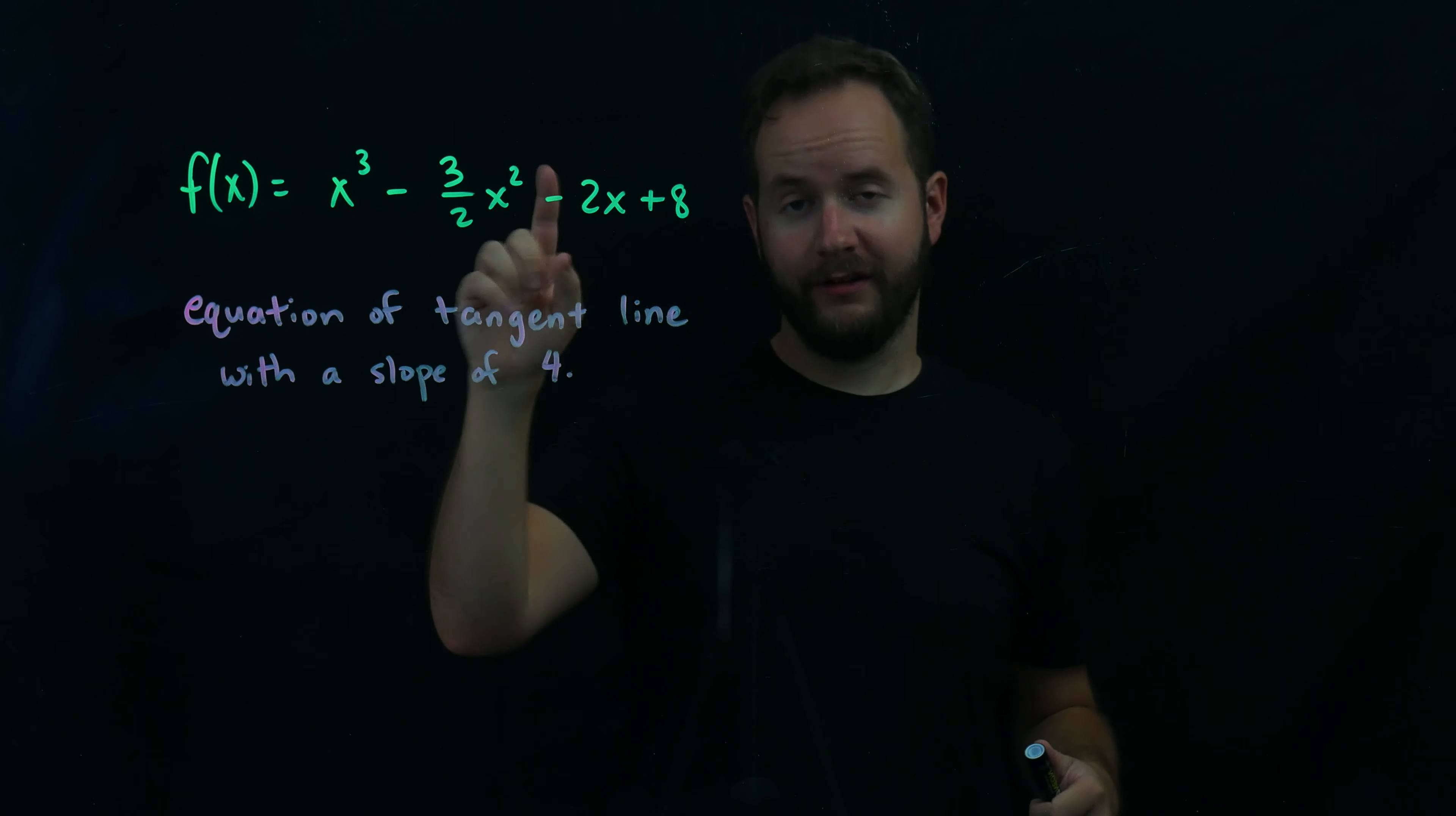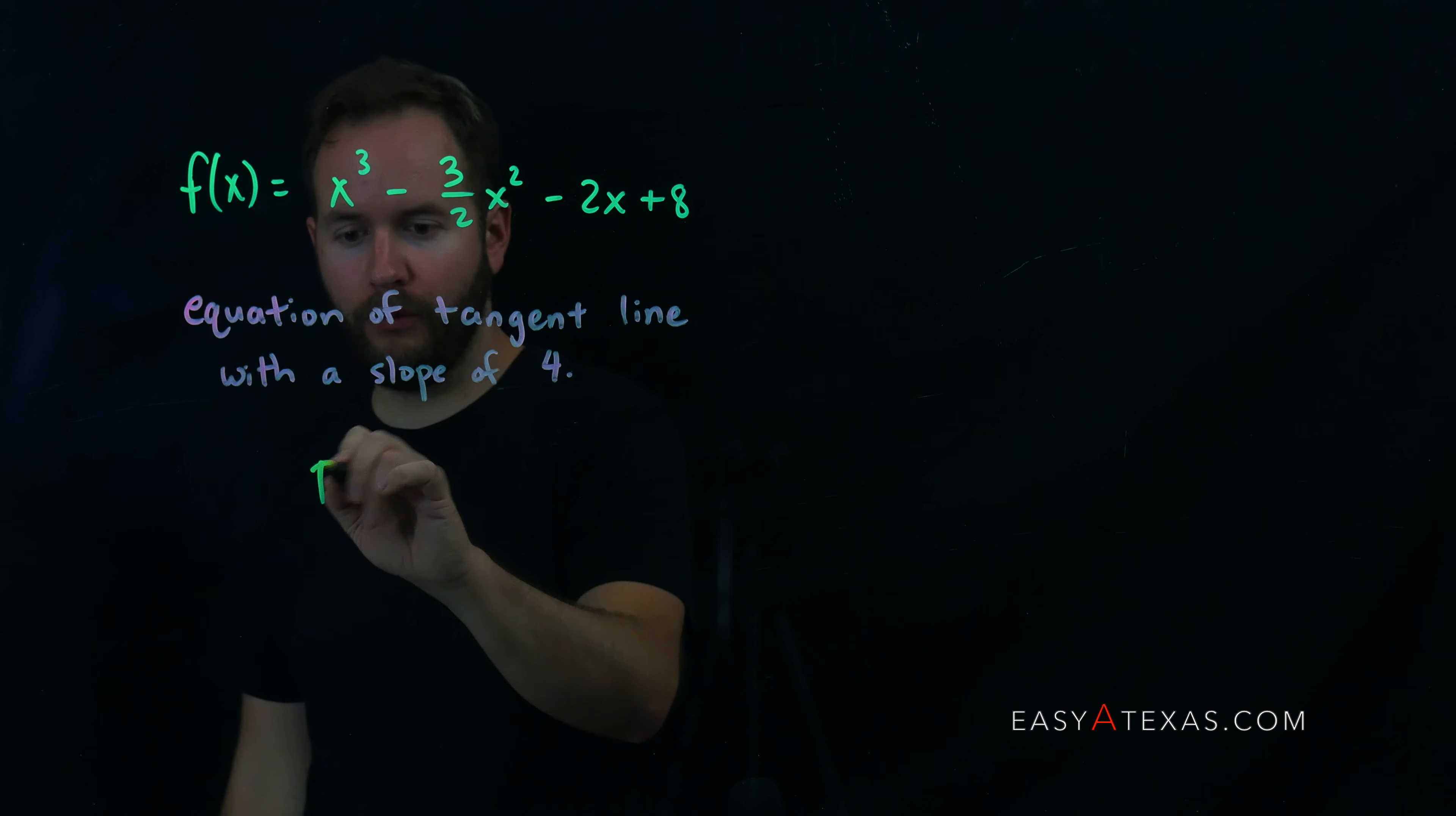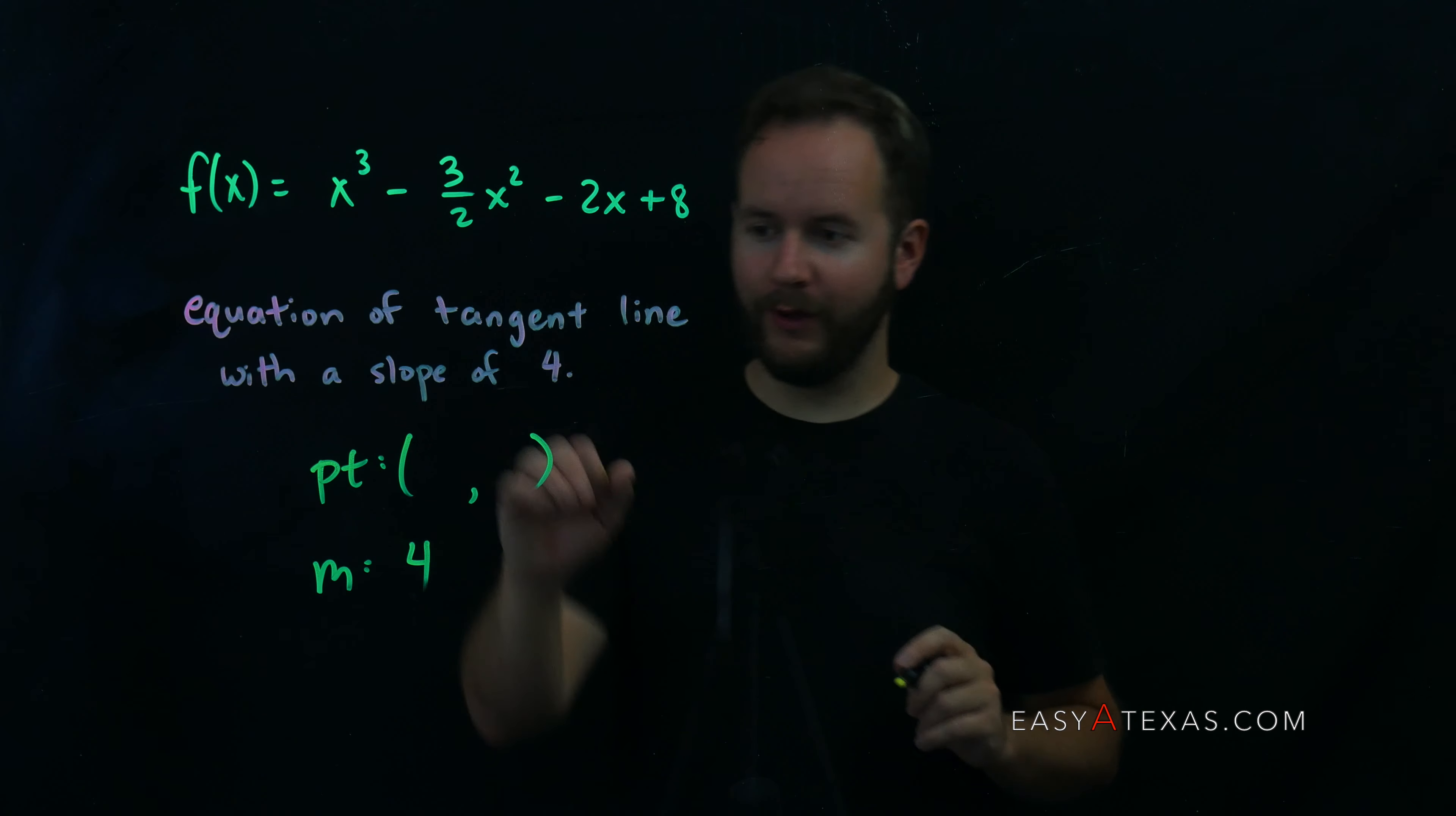Here we want to find the equation of a tangent line to this function with a slope of 4. Remember, equation of a tangent line just sets off alarm bells telling you you need two things: you need a point and you need a slope. The nice thing is that they've already given us the slope. They told us the slope is 4, but how do I get the point?